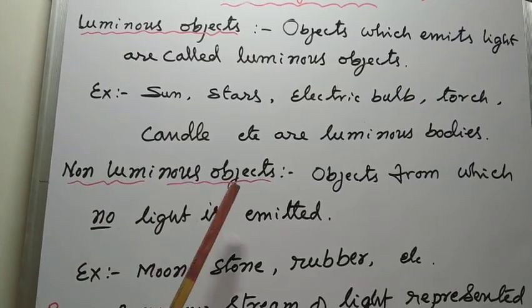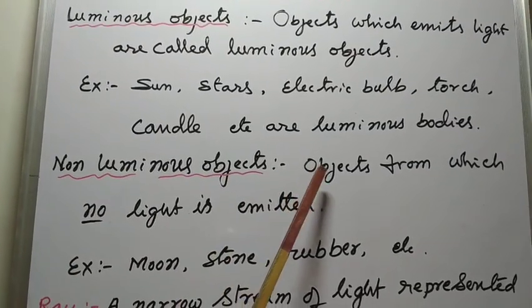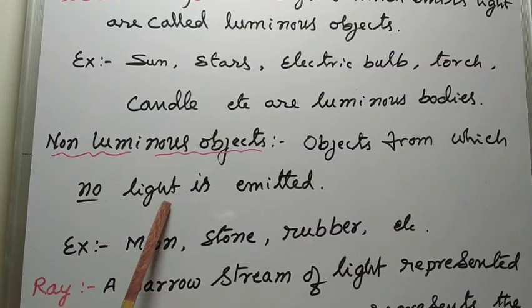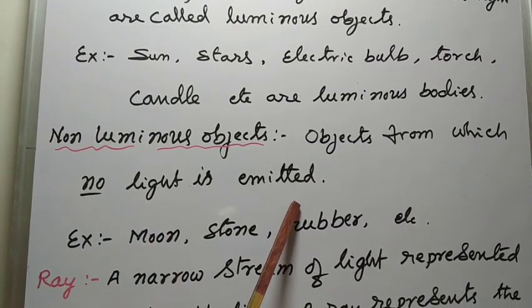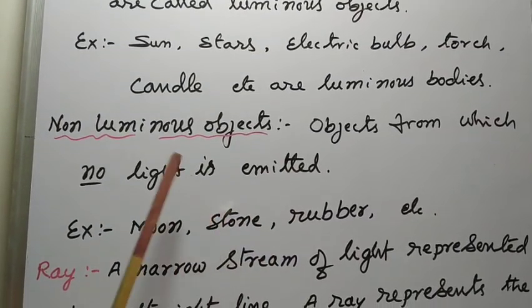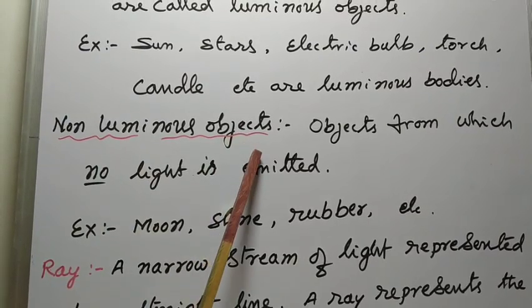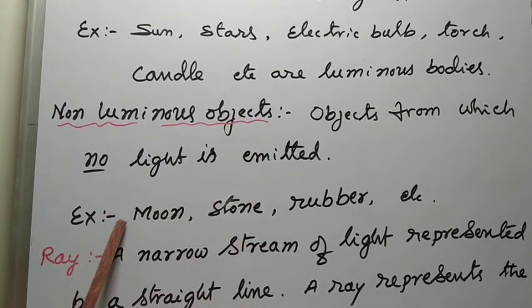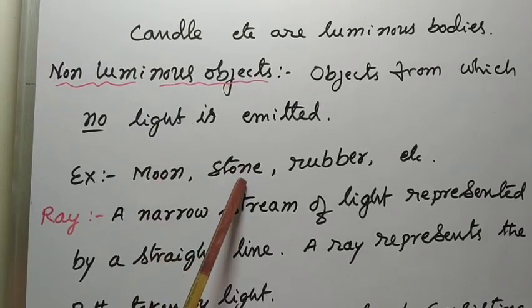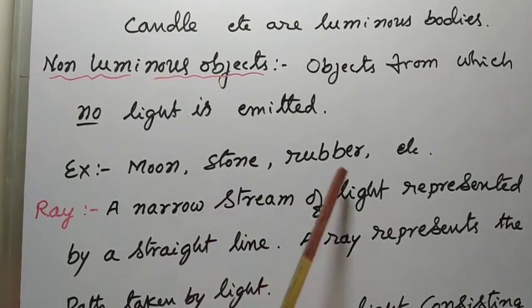Non-luminous Objects are objects from which no light is emitted. Such objects are called non-luminous objects. For example: moon, stone, rubber, etc.